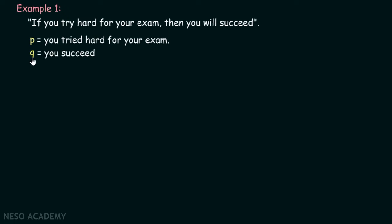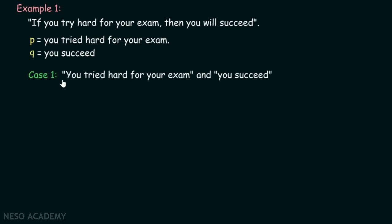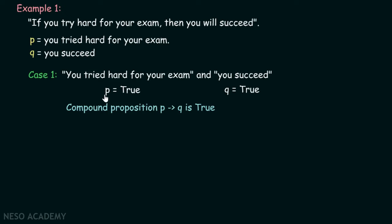To understand this conditional statement in better detail, we will consider four different cases. Case one: you tried hard for your exam and you succeeded. This means P is true and Q is also true. The compound proposition P implies Q would be true, because you tried hard for your exam and you also succeeded — the statement is correct, so P implies Q is true.